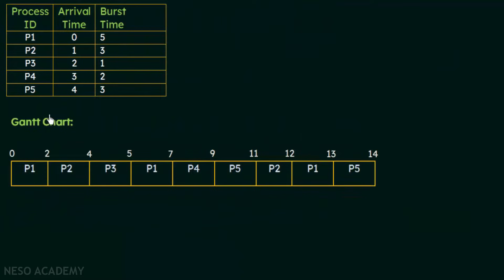This was the Gantt chart formed in our previous lecture. We saw that processes were preempted after completion of two units of time, which was the time quantum, then given to the next process. If the process currently executing did not complete its execution, it was kept at the end of the ready queue and given the chance again when its turn arrived. Process p1 started execution at time 0, and the last process to execute was p5, which completed at 14 units of time.